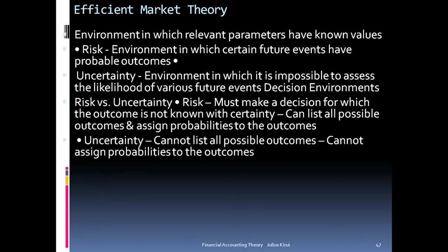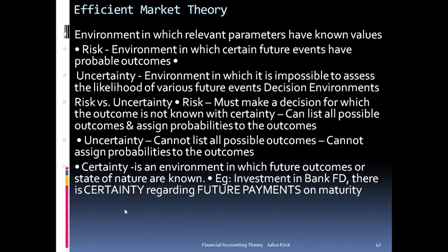When you talk about uncertainty, you can't accurately determine the outcome. But using probability, risk can be assessed. In uncertainty, probability cannot be reliably used. Certainty is an environment in which future outcomes or state of nature are known.